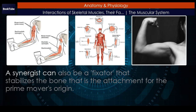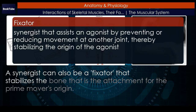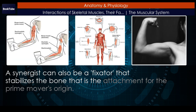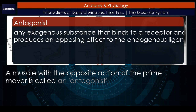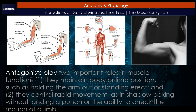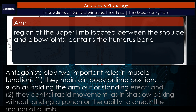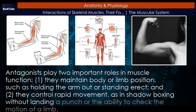A synergist can also be a fixator that stabilizes the bone that is the attachment for the prime mover's origin. A muscle with the opposite action of the prime mover is called an antagonist. Antagonists play two important roles in muscle function: they maintain body or limb position, such as holding the arm out or standing erect, and they control rapid movement, as in shadow boxing without landing a punch or the ability to check the motion of a limb.